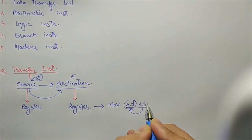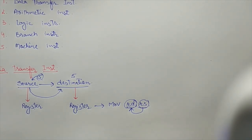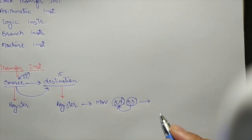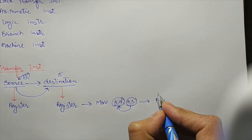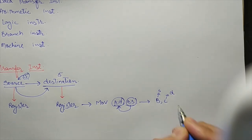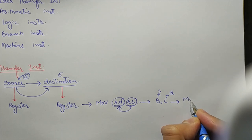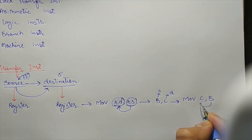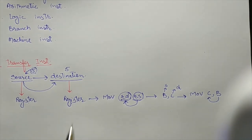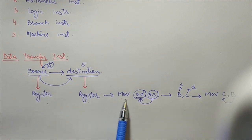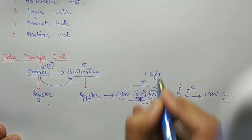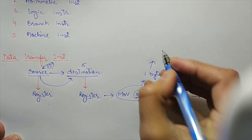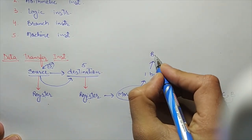The first register is the destination and the second register is the source. For example, if I have to move data from register B to register C, B is the source and C is the destination, so I write MOV C, B. This MOV Rd, Rs instruction is a one-byte instruction, meaning it is represented in machine language using 8 bits.